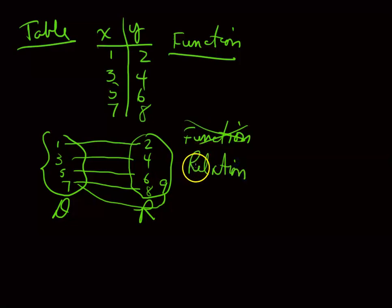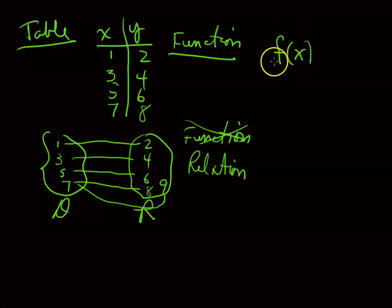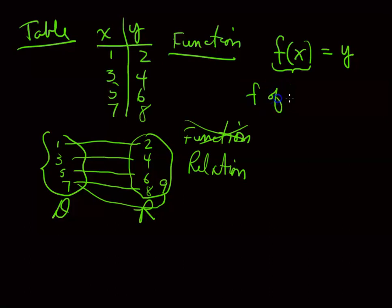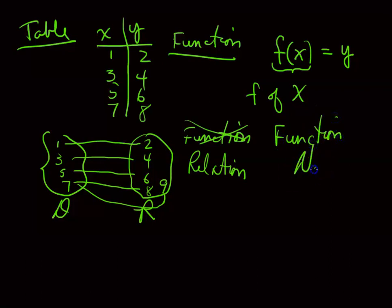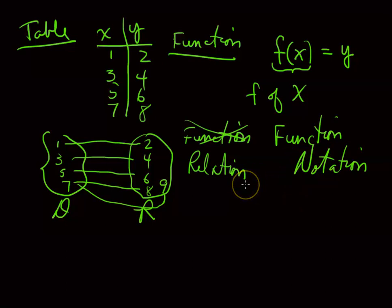For function notation, we use f(x). This is one chunk of notation — it is exactly the same as Y. It's not f times x; it's f of x, function notation. There is no special relation notation, just function notation.